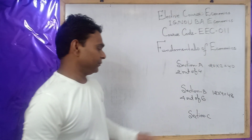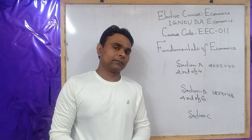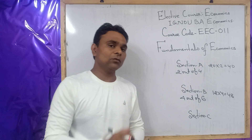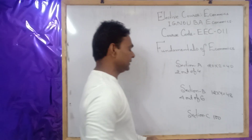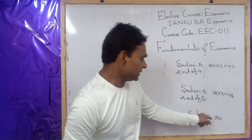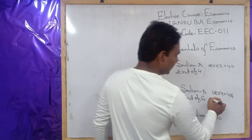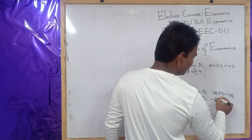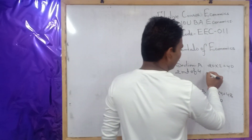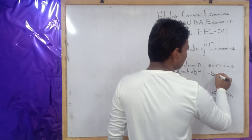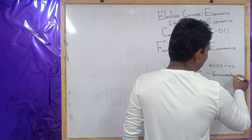And in Section C, you are given 3 questions, in which you have to answer only 2 questions in around 100 words. You need to write the answer in 100 words for Section C. For Section B, you need to write 250 words for each question, and around 500 words for each question of Section A.